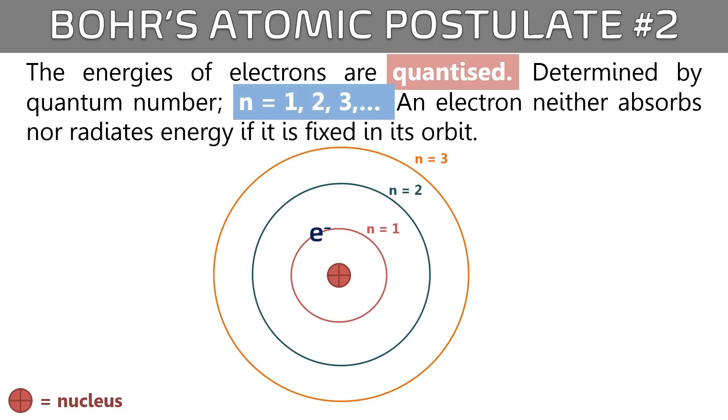An electron neither absorbs nor radiates energy if it's fixed in its orbit. Therefore, we can calculate the energy of the electron when it's fixed on its orbit. We can use this formula: En equals to negative RH times 1 over N squared. RH is the Rydberg constant with a value of 2.18 times 10 to the negative 18 Joule.